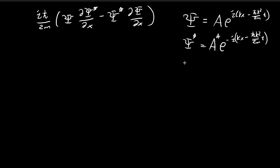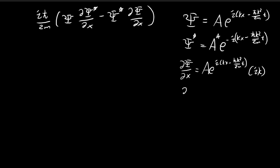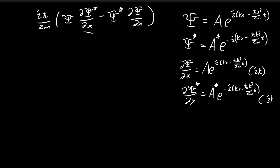We also need to take the derivatives of these two expressions. Taking the derivative of ψ — this is A times e to the power of something — I retain all this and apply the chain rule by differentiating the exponent, which gives ik. We're differentiating ikx, which equals ik, and the t term goes to zero because t is not affected by x. We also differentiate the conjugate: we retain all terms, keep the conjugate of A and the e term, and apply the chain rule — this time we get negative ik.